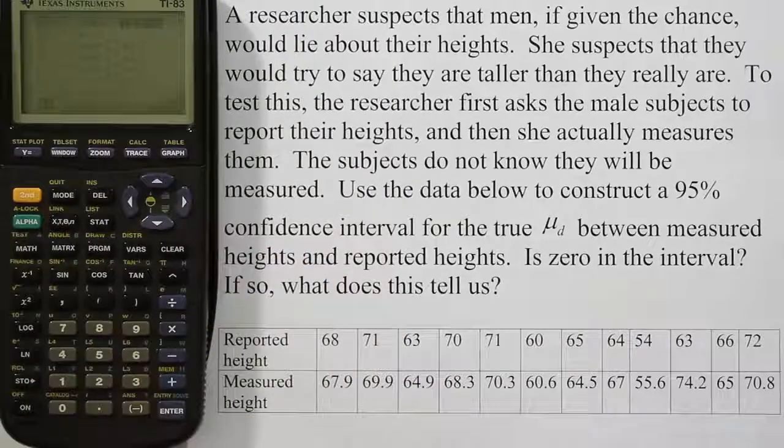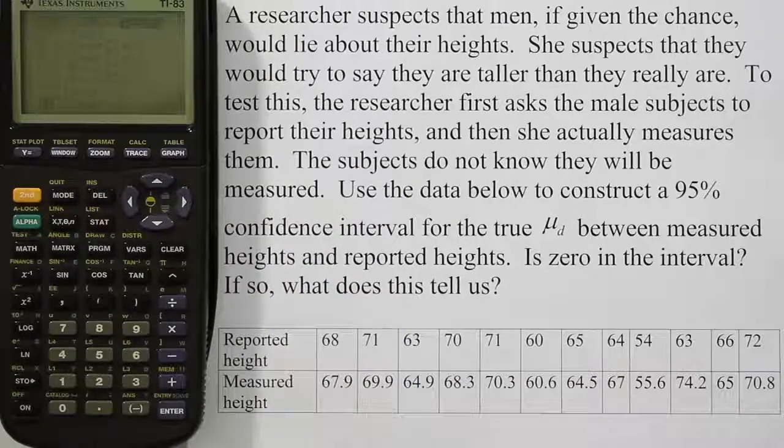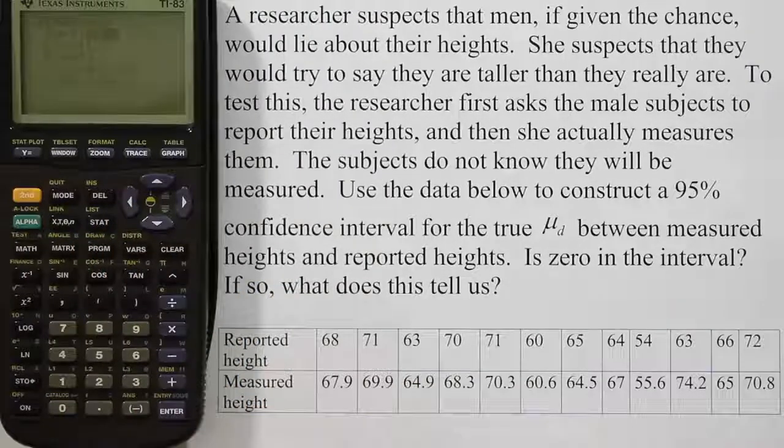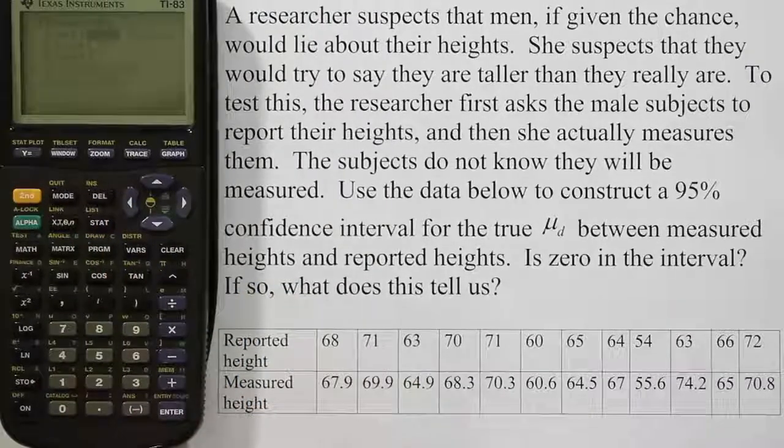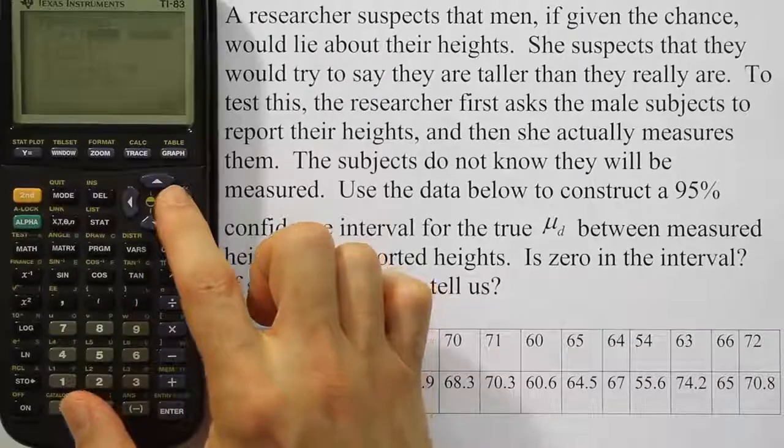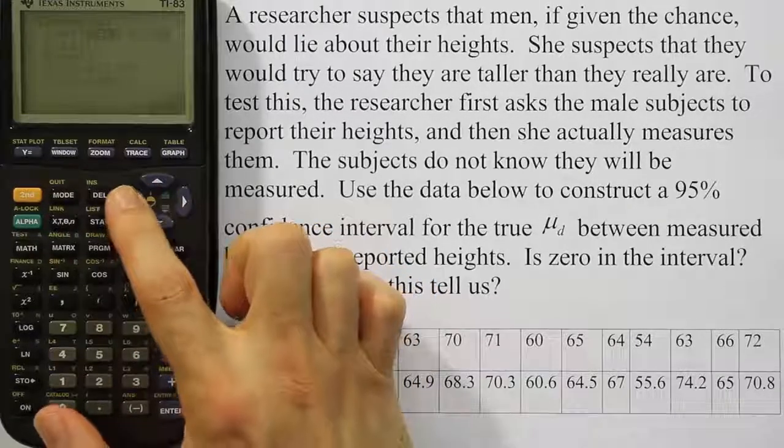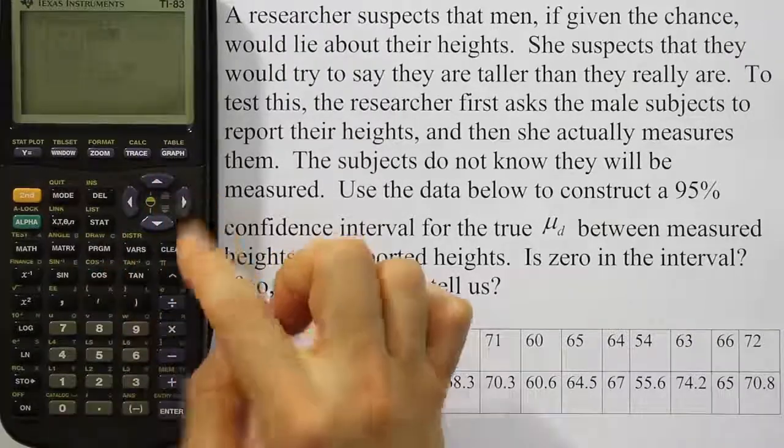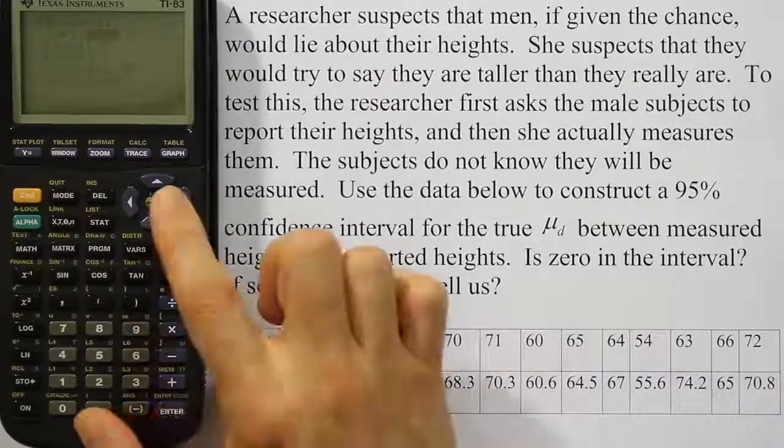For this problem, we're going to arrow down to where we see option for T interval. So I arrow down to T interval and I hit ENTER. When I do that, it says input and it's flashing on data. It could be highlighted to stats, but we want to make sure it's on data for these problems because we actually have our data stored in a list. So go to data, hit ENTER to confirm that.